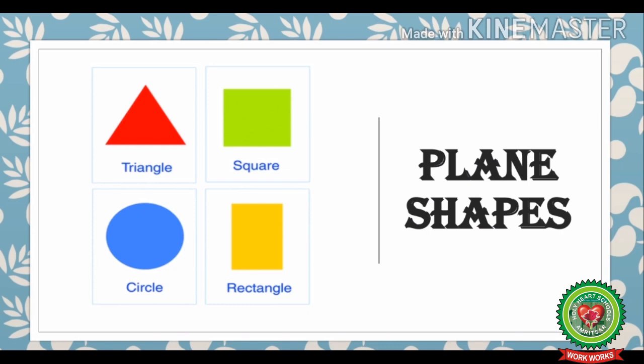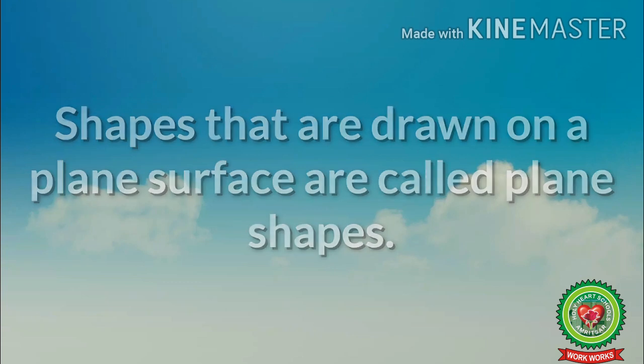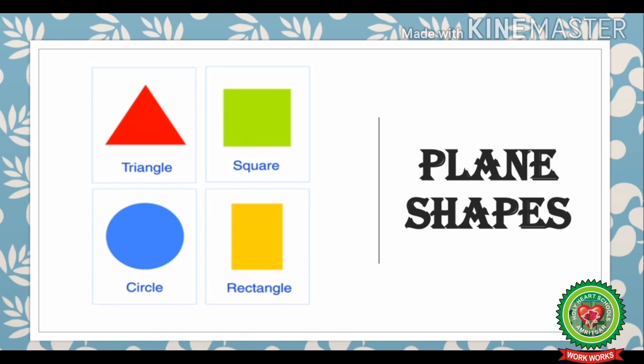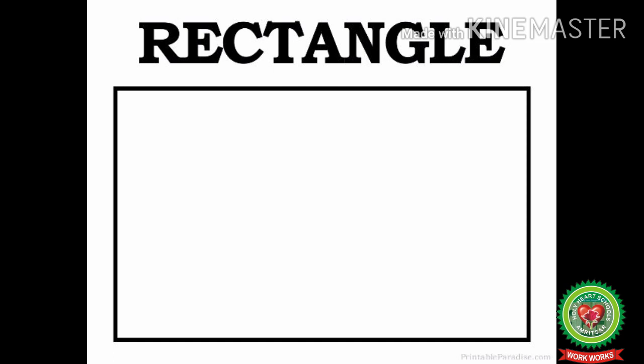So, what are plane shapes? Shapes that are drawn on a plane surface are called plane shapes. In our syllabus, we are going to learn about four common plane shapes: triangle, square, circle and rectangle. But today we are going to learn only about square and rectangle.